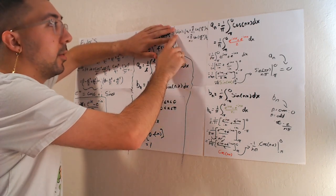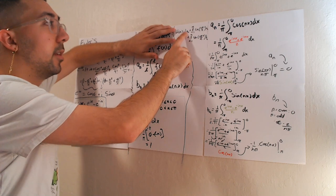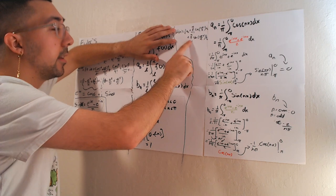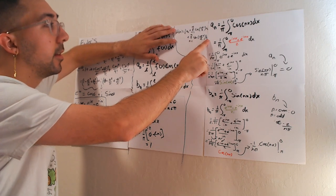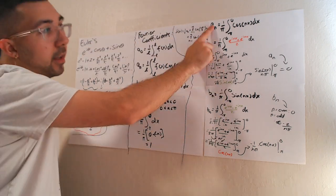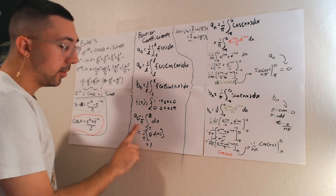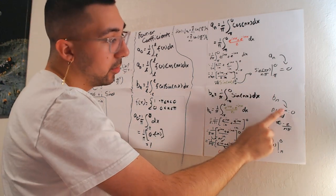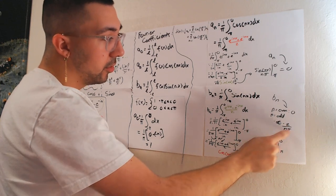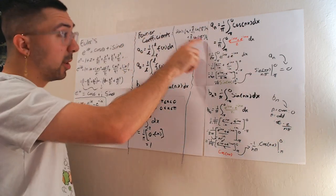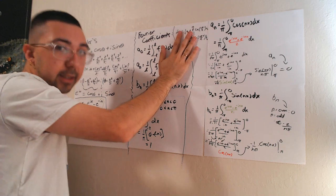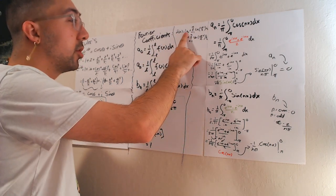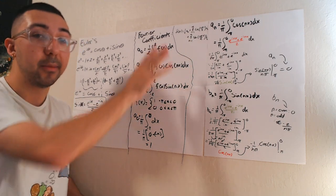This is f of x equal to 1 half a sub not plus the series of cosine of n pi x over l times a sub n, and the same thing but with sine and b sub n. And so what we're going to do is put our a sub not value, which is 1, a sub n value, which is 0, and b sub n value, which is both 0 and minus 2 over n pi. You would put these in there, and that would be your Fourier transform function with the Fourier coefficients already put in there.